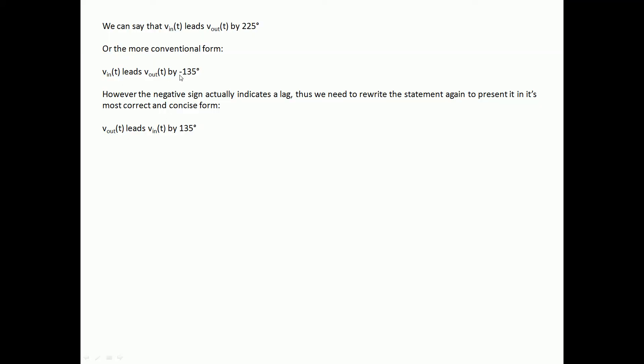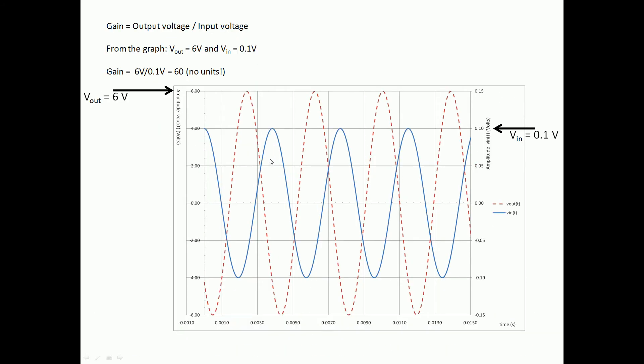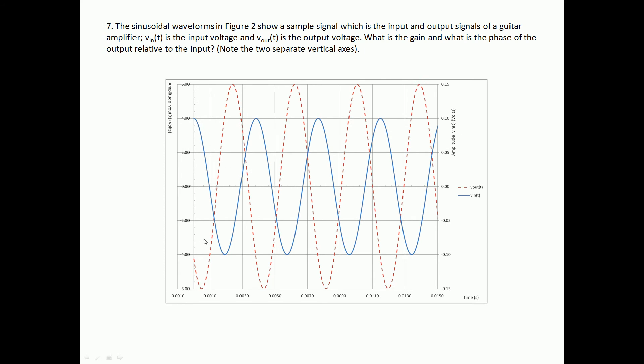So we've got rid of this negative sign and we've flipped the position. So we've now got V_in(t) is over here, so these positions have swapped to make it more correct.